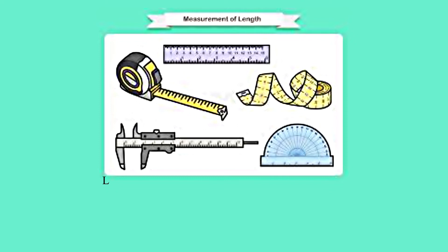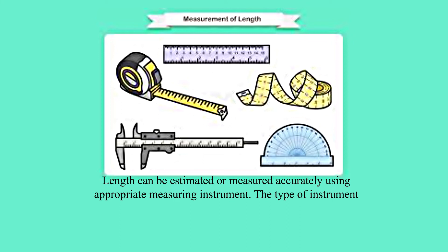Measurement of Length: Length can be estimated or measured accurately using appropriate measuring instruments. The type of instrument to be used at any time depends on two factors: 1. The size of the object to be measured, or 2. The desired accuracy.